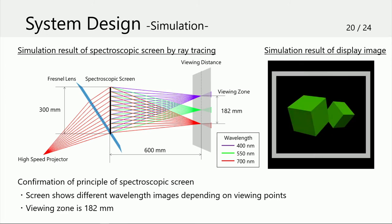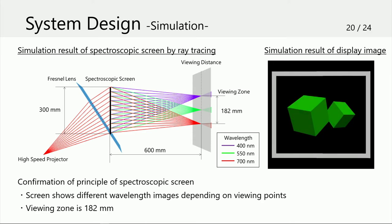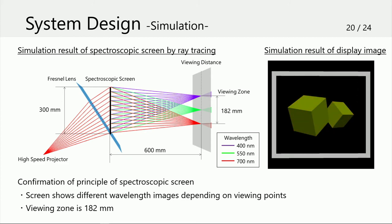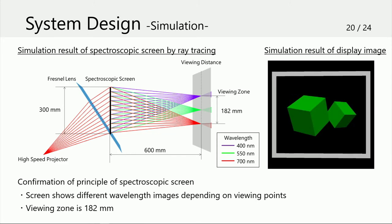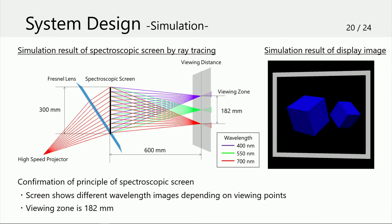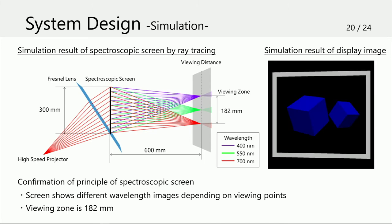We conducted simulation of the screen by ray tracing. It was found that the screen shows different wavelength images depending on viewing point. The viewing zone is 182 mm. The figure shows simulation results of the display image, expressing the difference of observed images according to horizontal movement of the viewing point. We confirmed that the screen can show 3D images from this result.